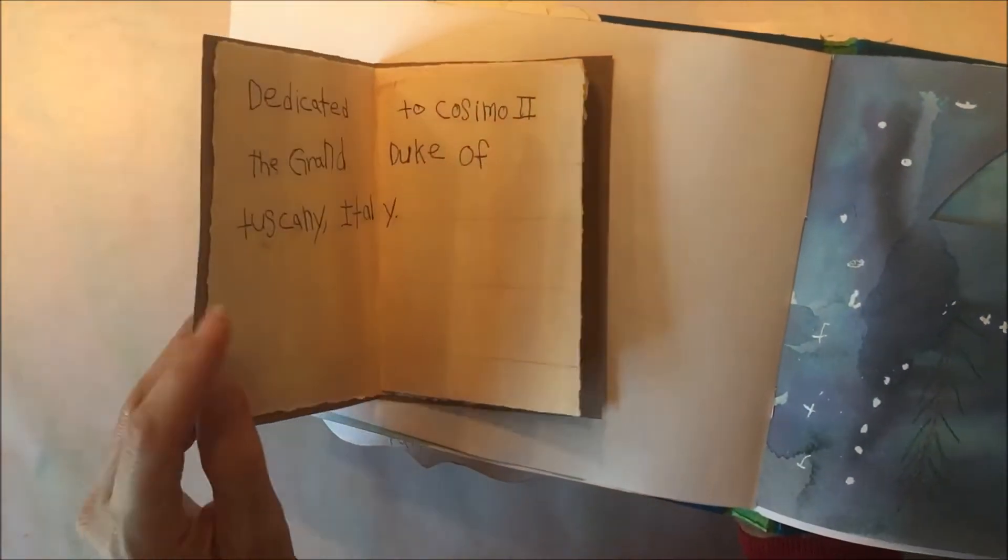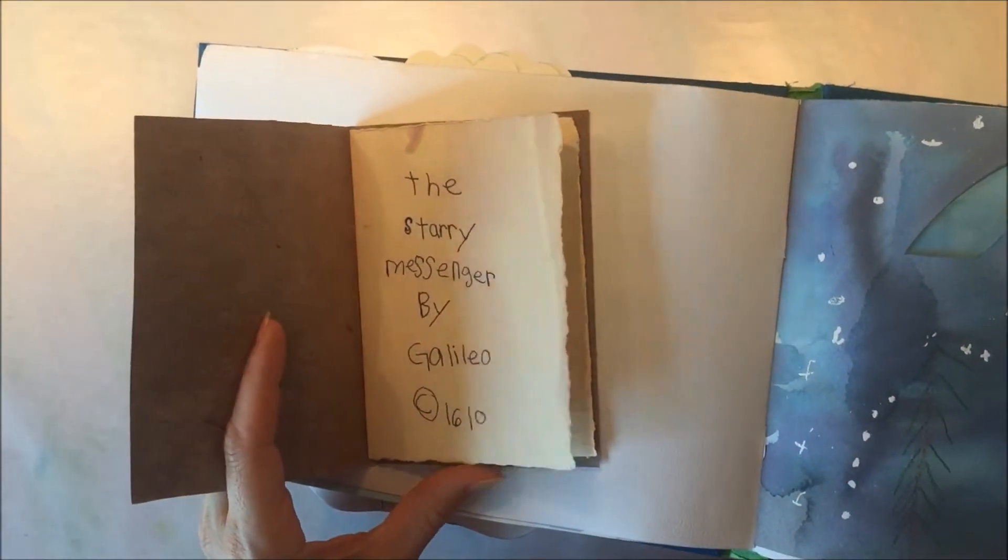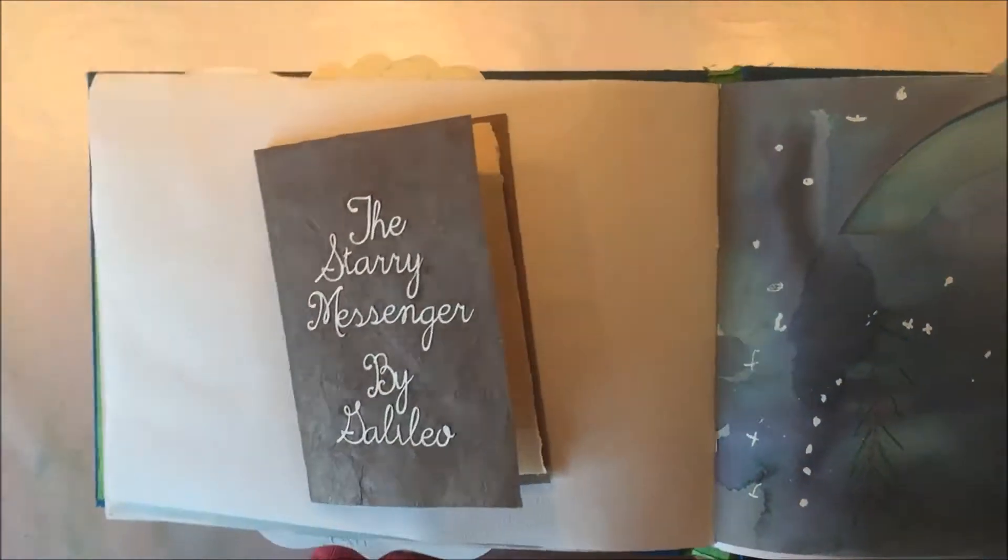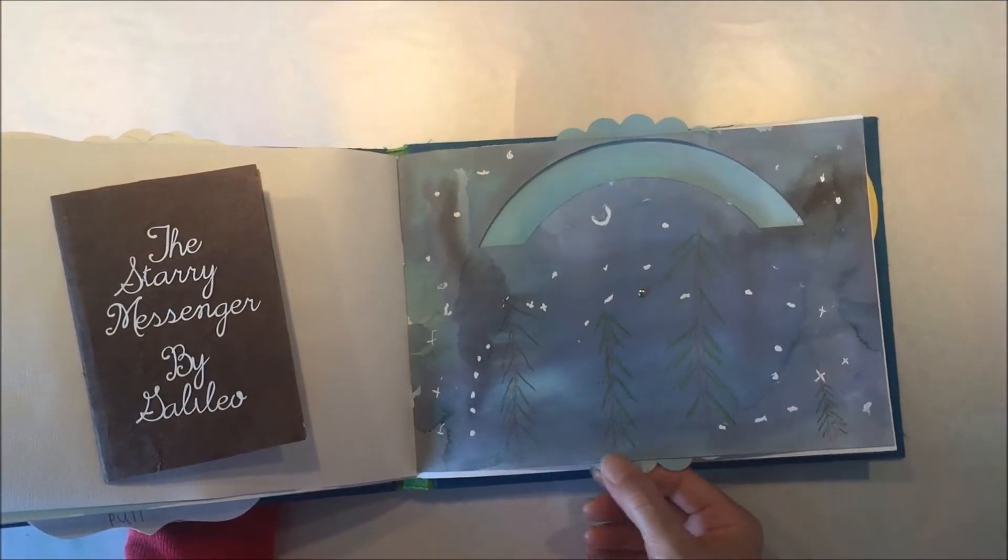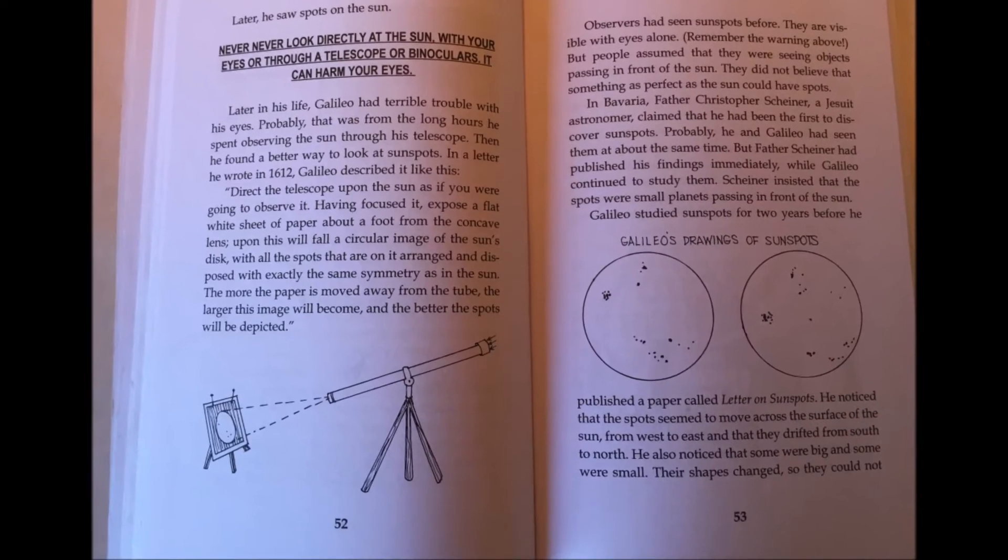He also wrote a little pamphlet called the Starry Messenger. And a few years later after that, there was a comet, there were actually three comets that were seen in the sky, I think in 1618 or something. So we did that little interactive element as well.